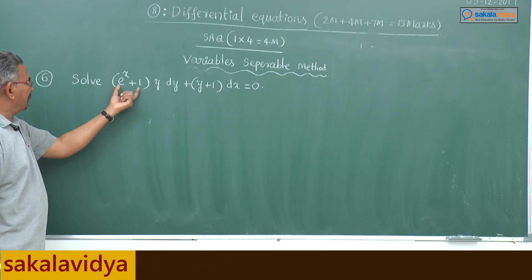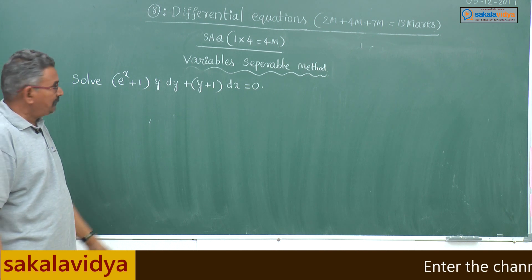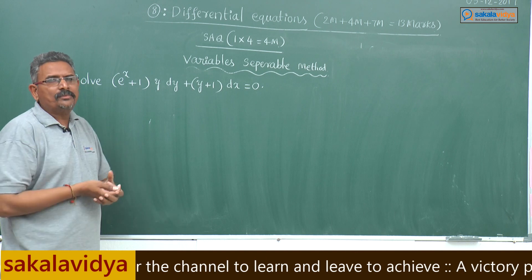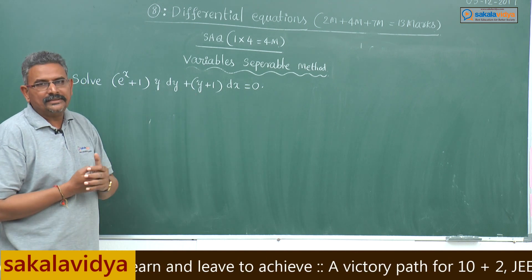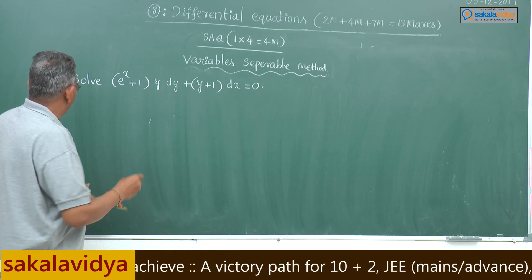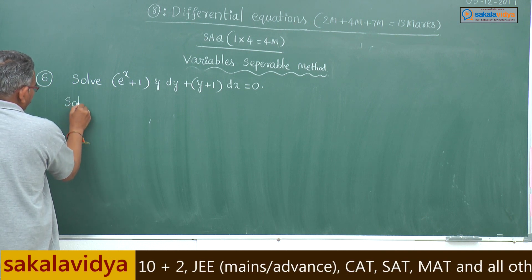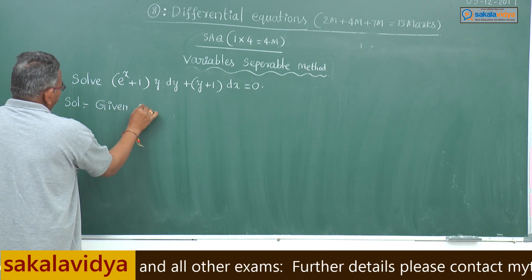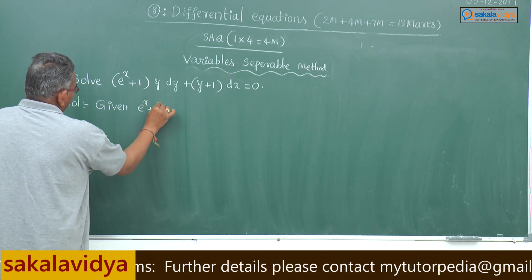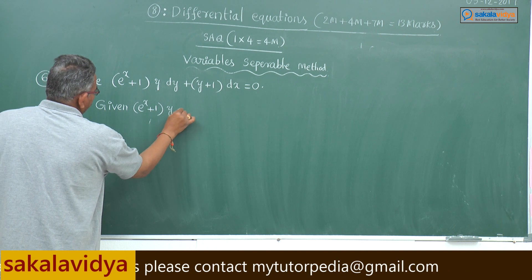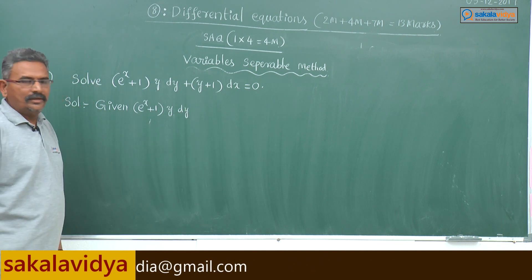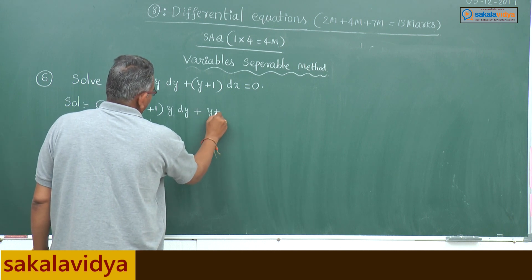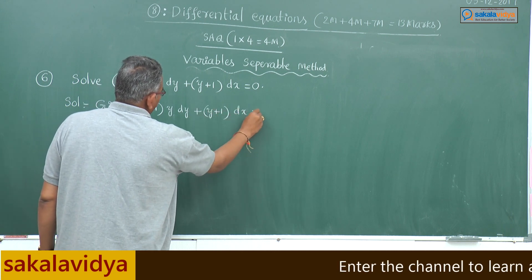Solve: (e^x plus 1) y dy plus (y plus 1) dx equals 0. This is also one of the problems of the variable separable method. Given: (e^x plus 1) y dy plus (y plus 1) dx equals 0.